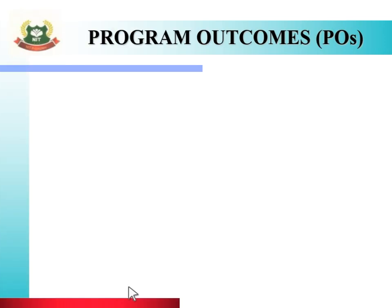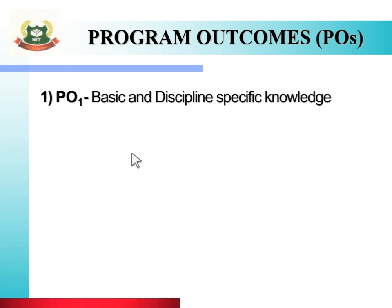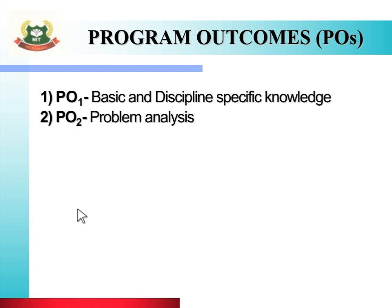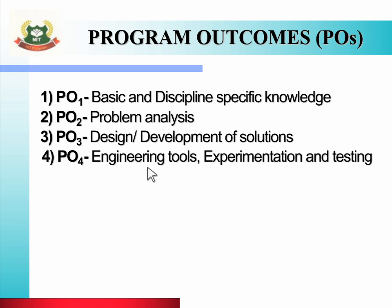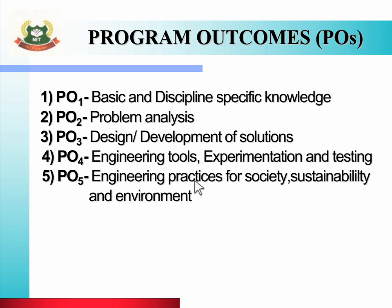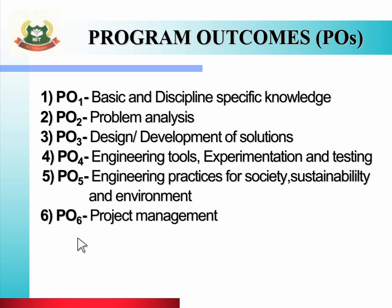To achieve this vision and mission, there are seven program outcomes. PO1 is basic and discipline-specific knowledge. PO2 is problem analysis. PO3 is design and development of solutions. PO4 is engineering tools, experimentation and testing. PO5 is engineering practices for society, sustainability and environment. PO6 is project management and PO7 is lifelong learning.